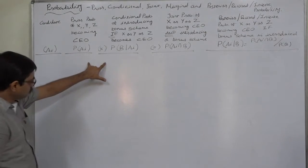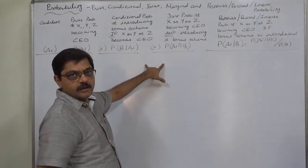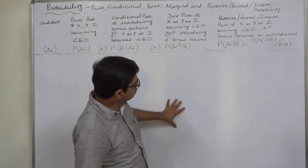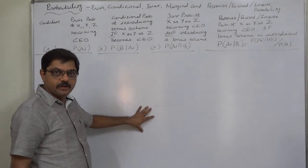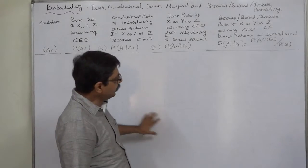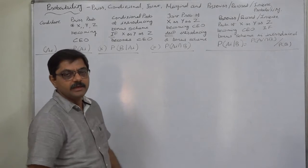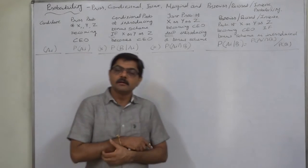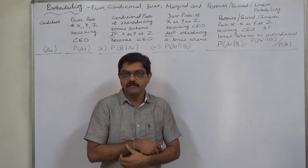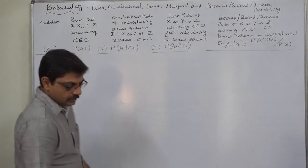If we multiply these two, we can have the joint probability of appointment of a particular candidate and introducing the bonus scheme. On the basis of this, we can have the marginal probability of introducing a bonus scheme irrespective of any candidate becoming CEO. And ultimately, we can calculate the posterior or revised or inverse probability of a particular candidate becoming CEO, given that the bonus scheme has been introduced.